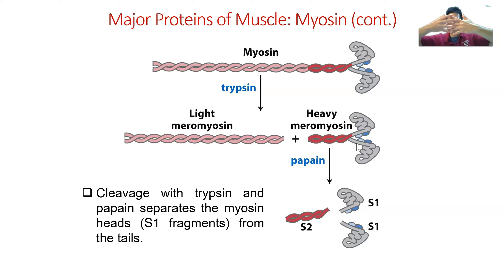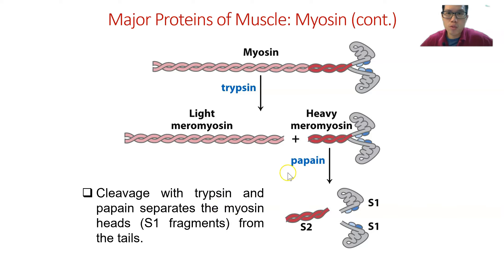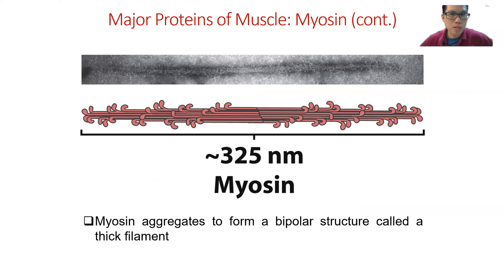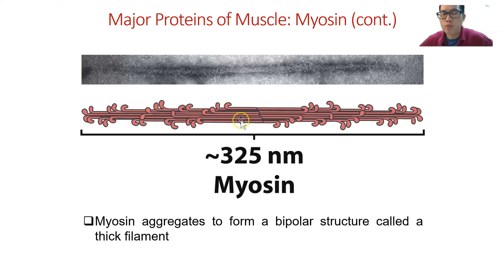Once the myosin head is broken off, it can no longer interact with the actin, so the muscle tenderizes — it is no longer in contraction mode and tears apart. That is the relevance to meat. The myosin in muscle is not just one strand; there are many myosin molecules intertwined into one bundle, with multiple myosin heads working together.